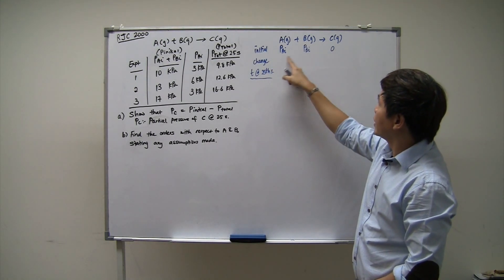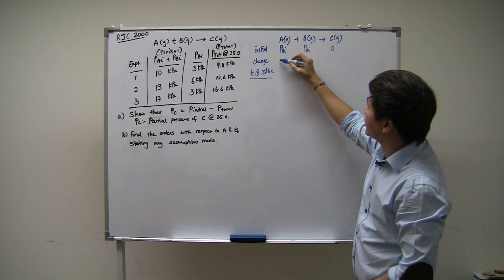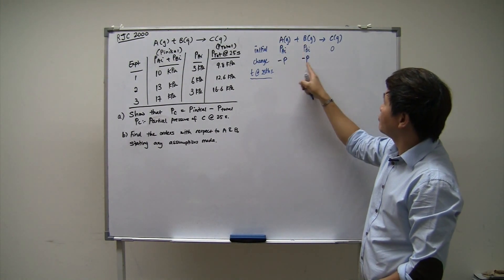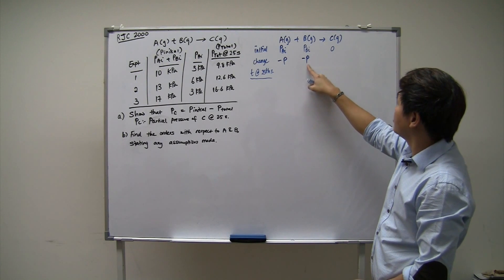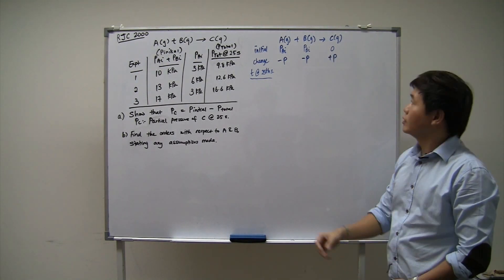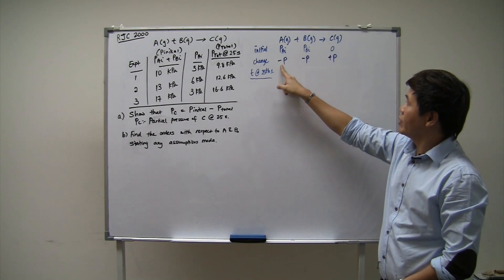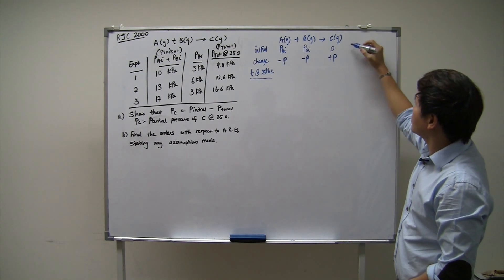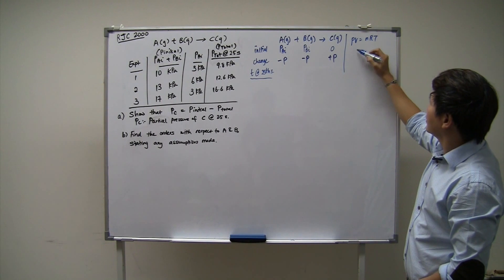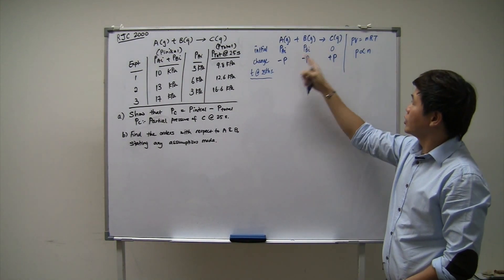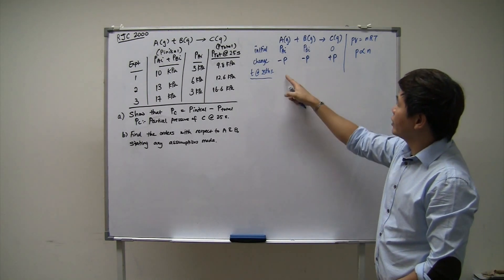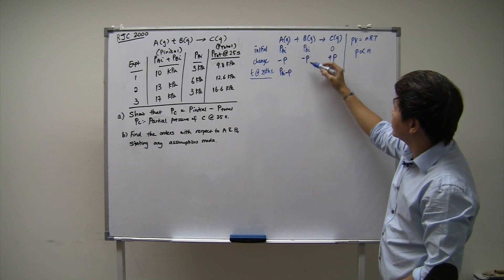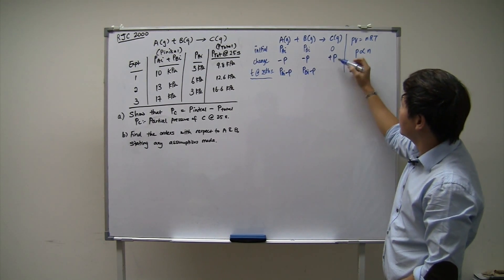The initial pressures of A and B are PAI and PBI. According to mole ratio, if P amount of A has reacted, the molar ratio of A to B is 1:1, so the amount of B that's reacted is also P (minus P), and the amount of C formed is plus P. The ratio is 1:1:1, so the amount of A reacted equals B reacted equals C formed. We're using pressure instead of moles because from the ideal gas law PV = nRT, pressure is proportional to moles, so we can use pressure ratios. At the 25th second, A remaining is PAI minus P, B remaining is PBI minus P, and C is P.